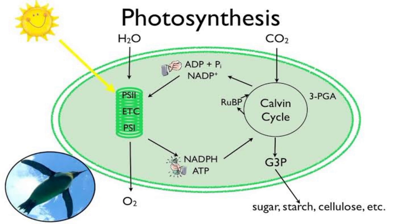The process can be broken down into two stages: the light-dependent reactions and the Calvin cycle. In the light-dependent reactions stage, light energy is captured by pigments in the thylakoid membranes and converted into chemical energy in the form of ATP, adenosine triphosphate,